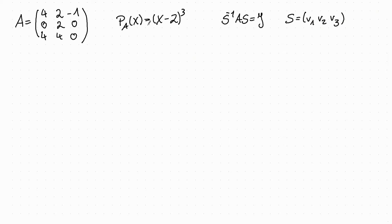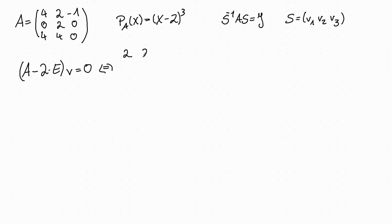We start by computing the eigenspace of this matrix for the eigenvalue 2. So we have to compute (A minus 2 times the unit matrix) times a vector V equals 0, which gives the matrix 2, 2, minus 1, 0, 0, 0, 4, 4, minus 2 times V equals 0.